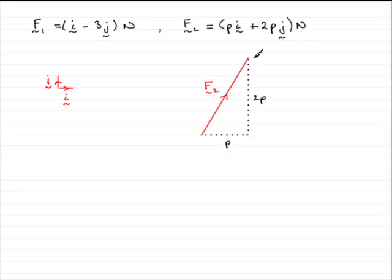Now it says what angle does F2 make with the positive j vector? So if j goes upwards, then we're looking at this angle in here — I'm going to call that theta. Now theta is the same as this angle over here; they're alternate angles. So I'm going to find out this value of theta.